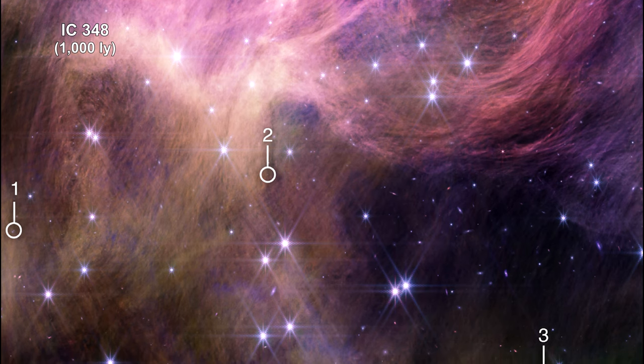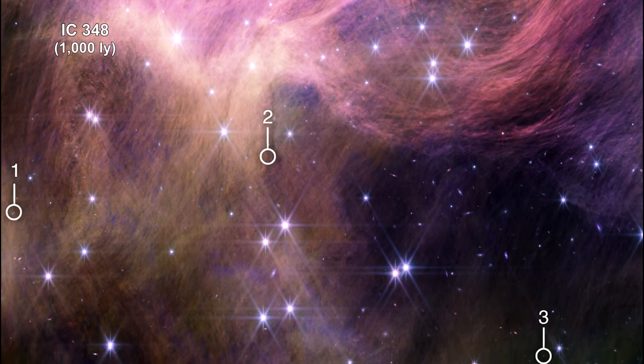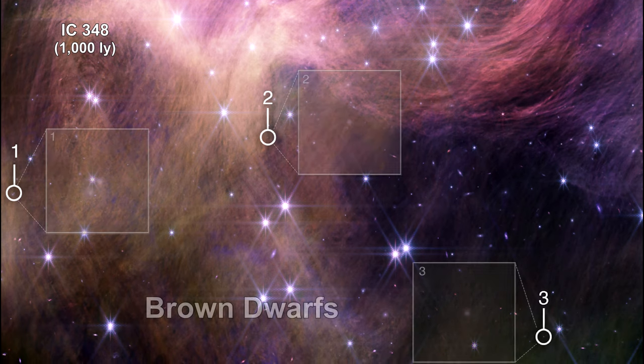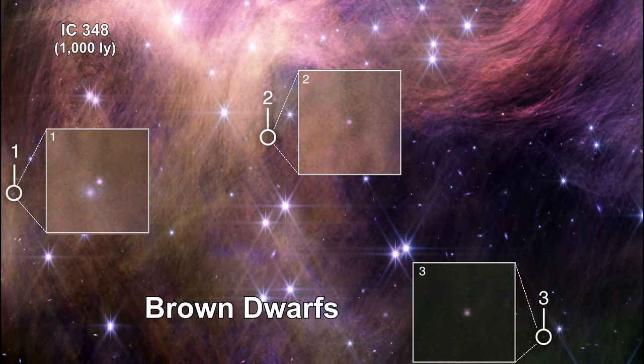At the low end of the scale, some brown dwarfs are comparable with giant planets, weighing just a few times the mass of Jupiter. Here they are circled in the main image and shown in the detailed pull-outs. The smallest weighs just three to four times Jupiter.